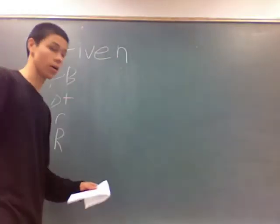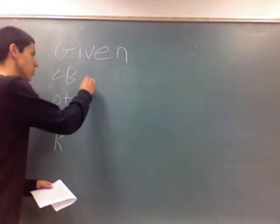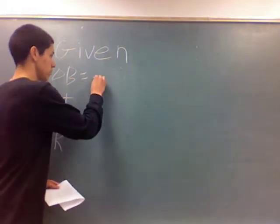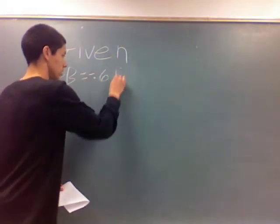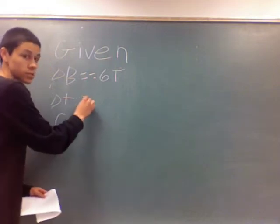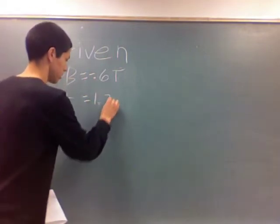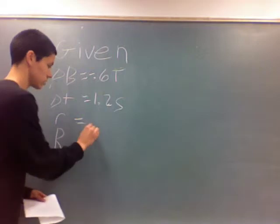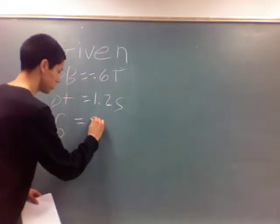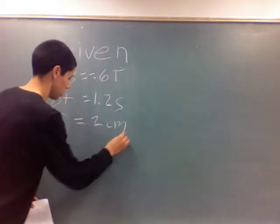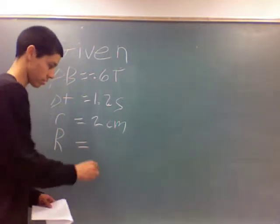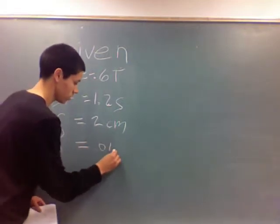First we have to list our givens. Our delta B is negative 0.6 tesla, delta T is 1.2 seconds, our radius of the solenoid is 2 centimeters, and our resistance in the LED flashlight is 0.01 ohms.